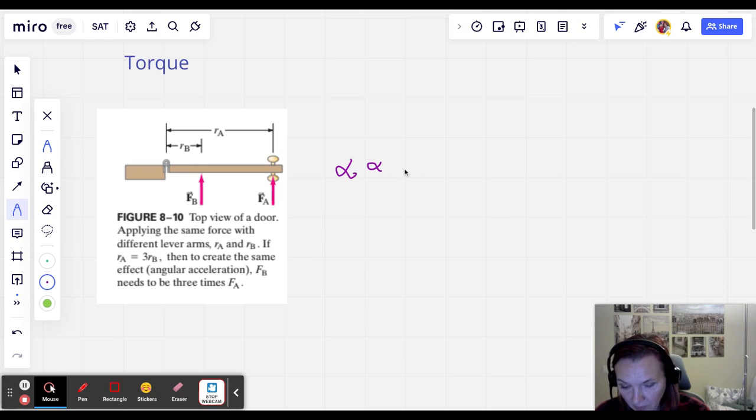Let me write down: angular acceleration alpha is proportional to the product of the force times the lever arm. And that product is called the moment of the force and it is denoted by a Greek letter tau, T-A-U. Greek letter tau, looks like a T. So alpha is proportional to tau. Angular acceleration is proportional to the torque. So tau is the torque.